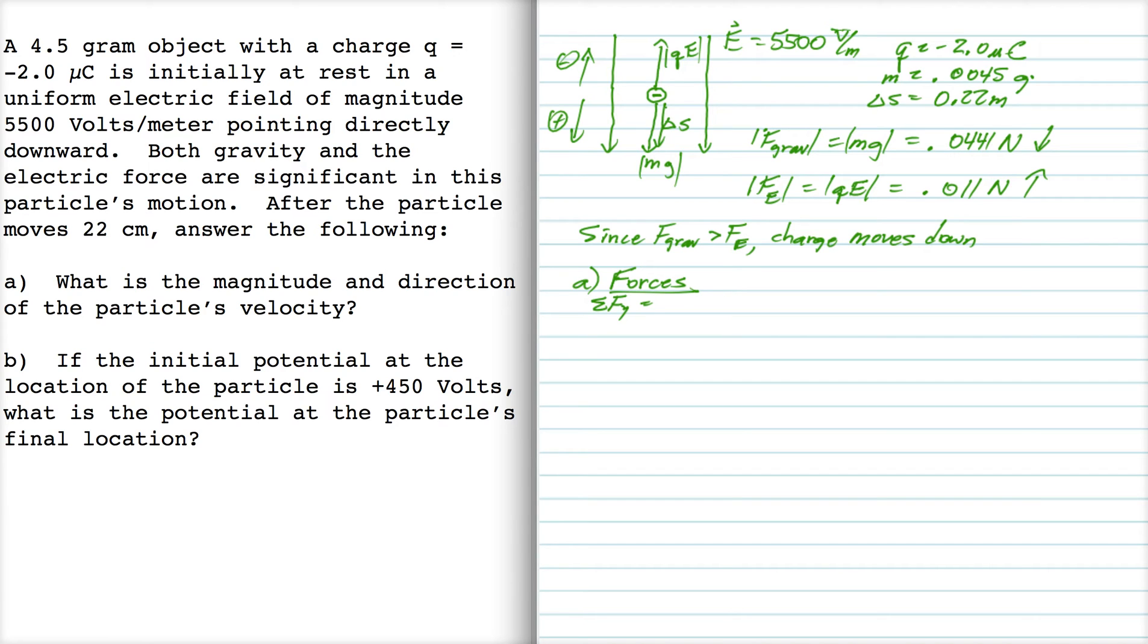So the sum of the y forces is going to be plus gravity, because it points down, and minus the electric force, because it points up, and that's going to equal ma. Okay, so that's 0.0441 minus 0.011 is equal to 0.0045A.